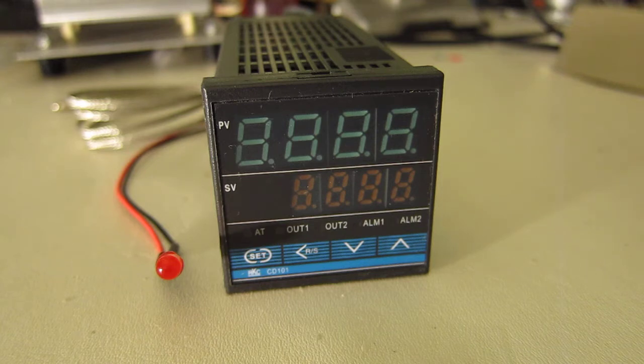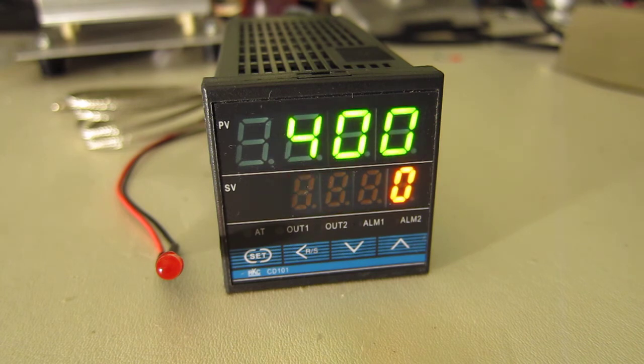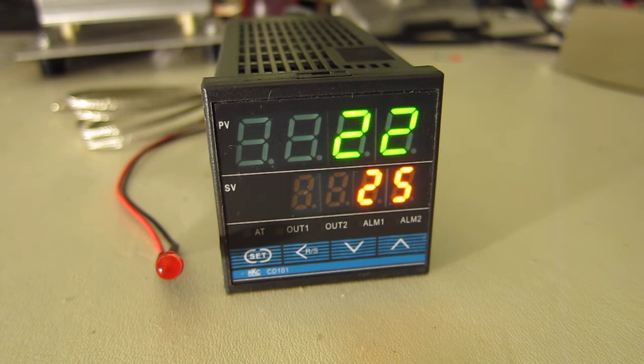But before I can do that I have to apply power so I'll switch on the AC power and you can see that I've got it set for degrees Celsius display and K-type thermocouple input.